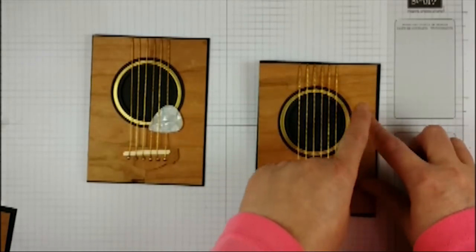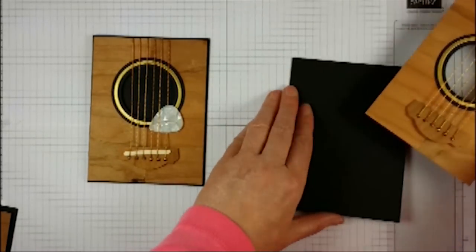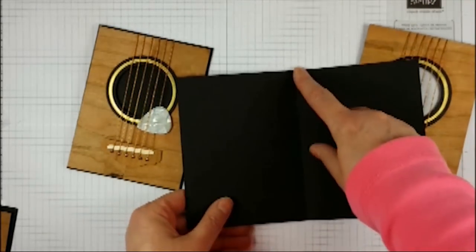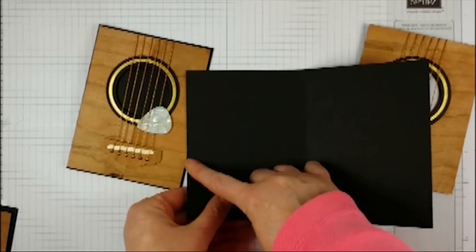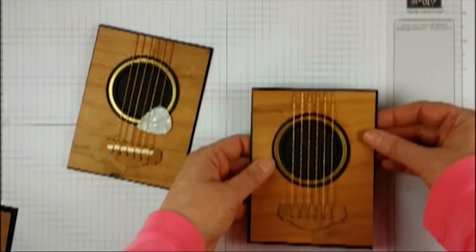By eight and a quarter inches across folded in half. So the card is five and three-eighths by eight and a quarter folded in half, and then you would apply this just like that.